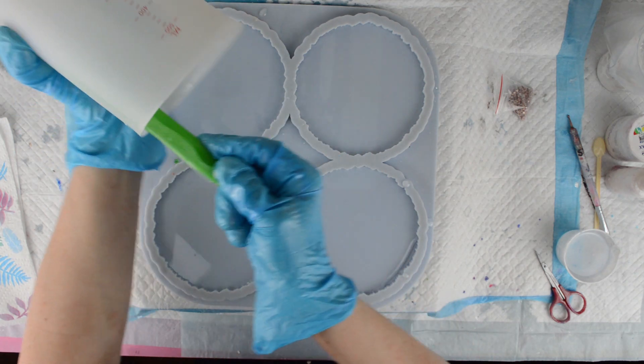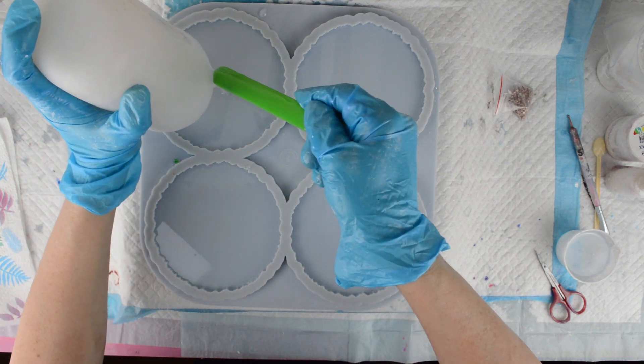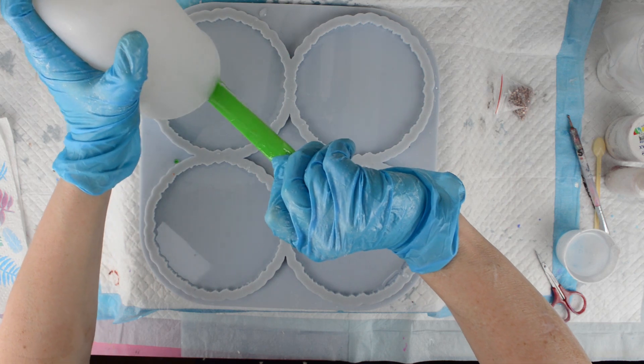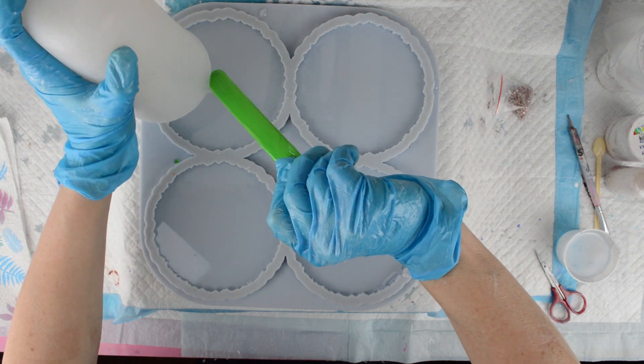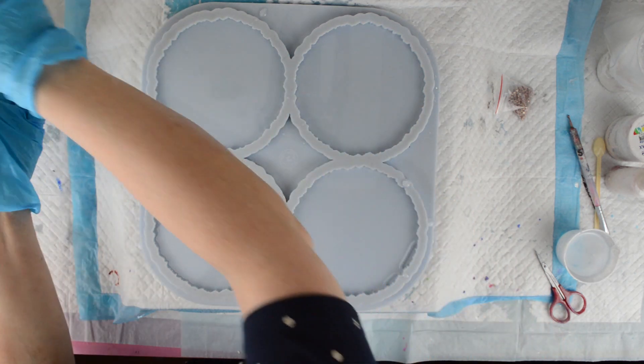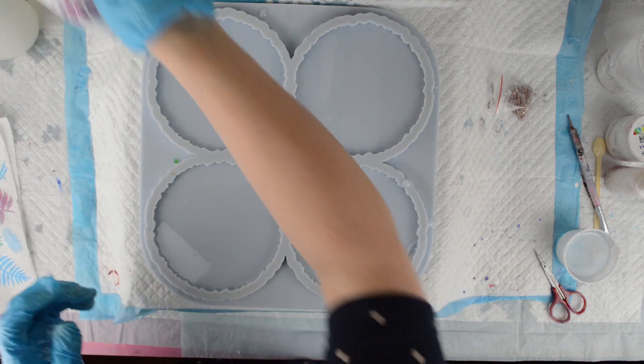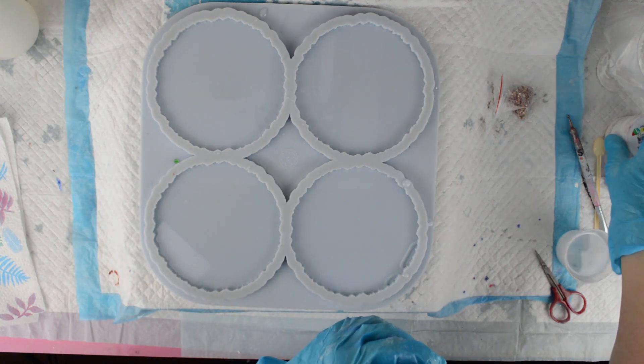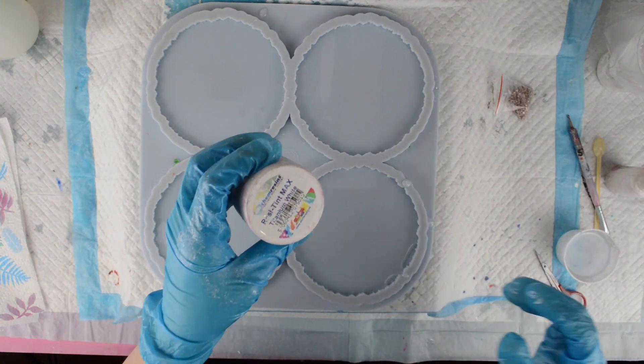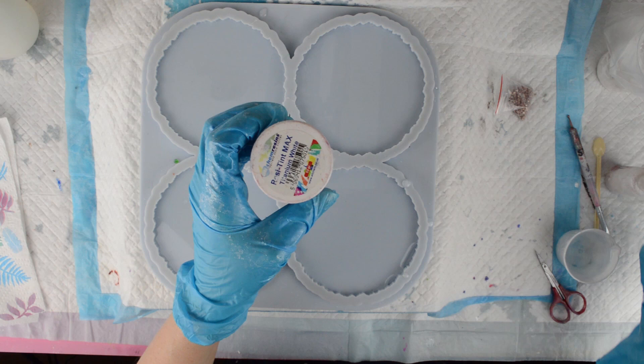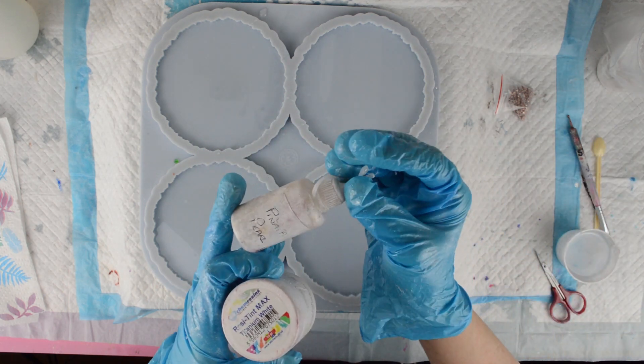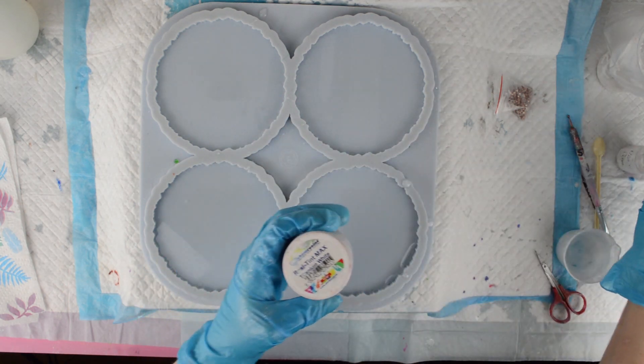I'm going to make the white resin up and I'm going to be piping the resin. So for my resin, my white resin, I'm using Resitint Max in Titanium White and my usual Pinata Pearl alcohol ink.